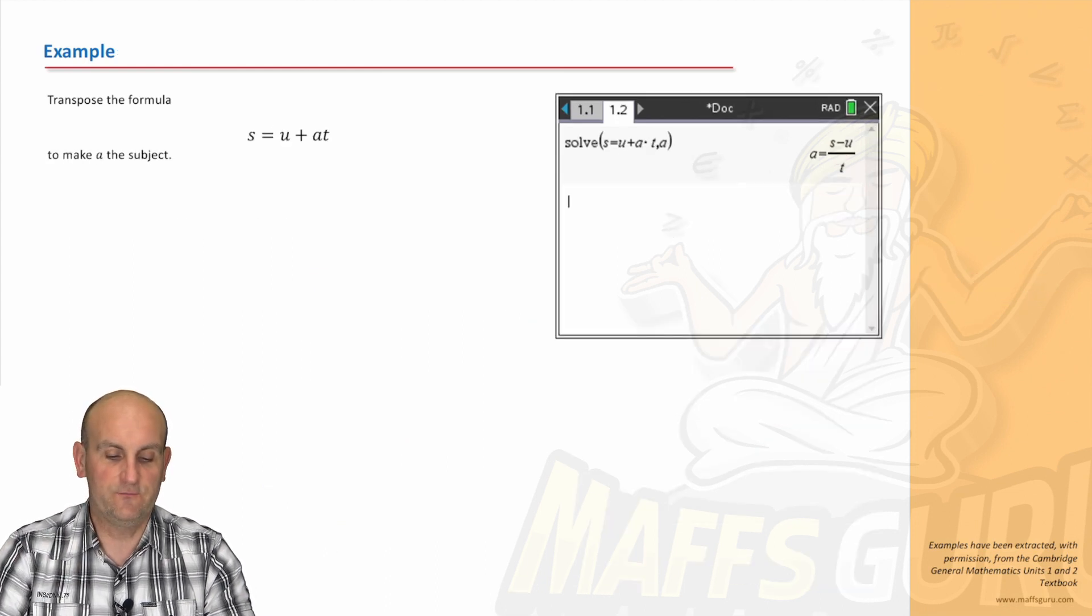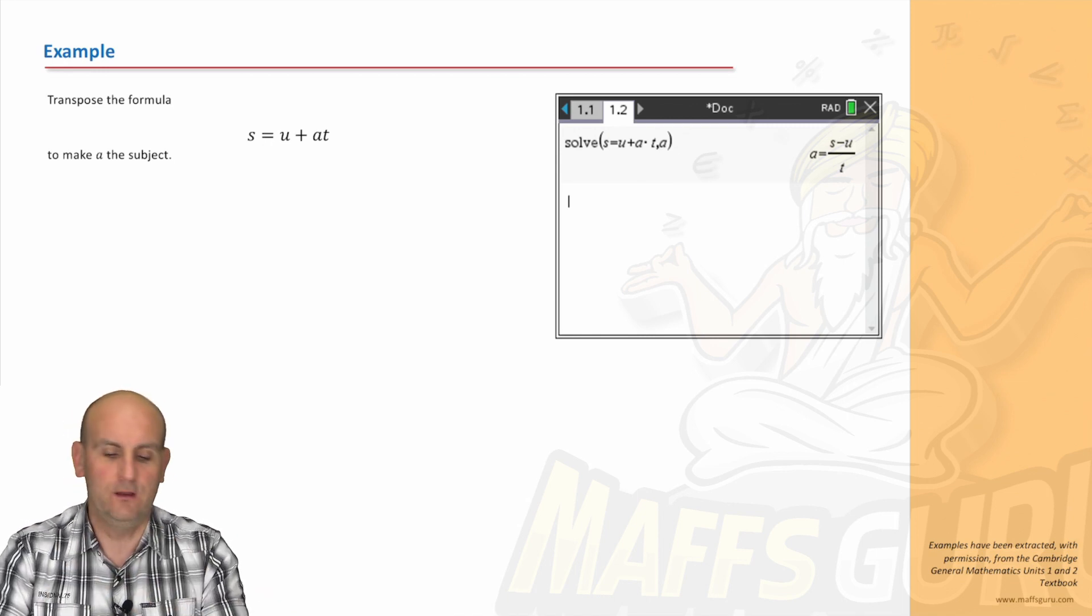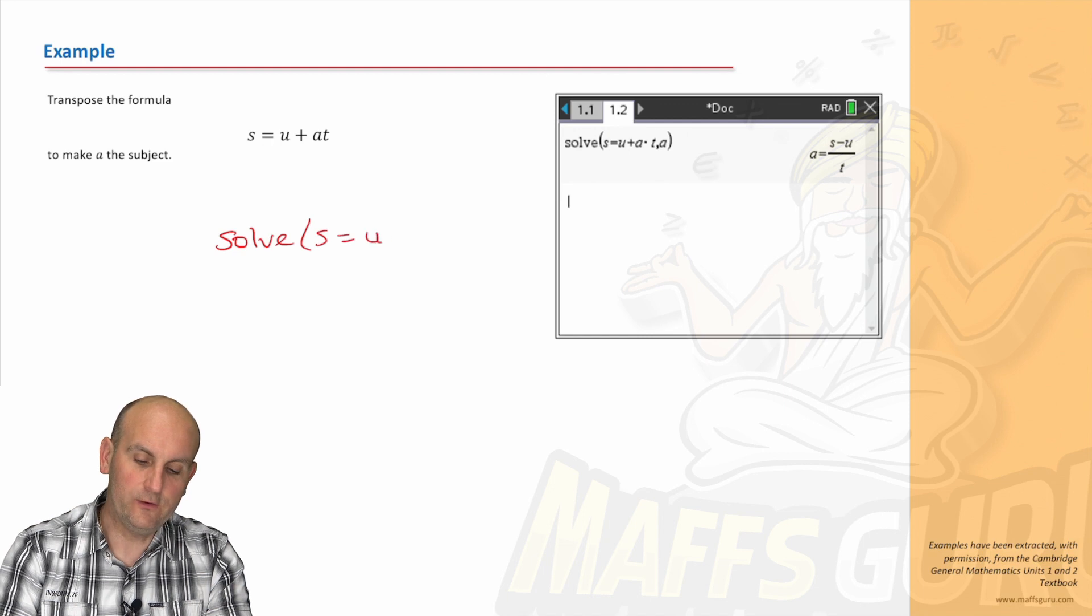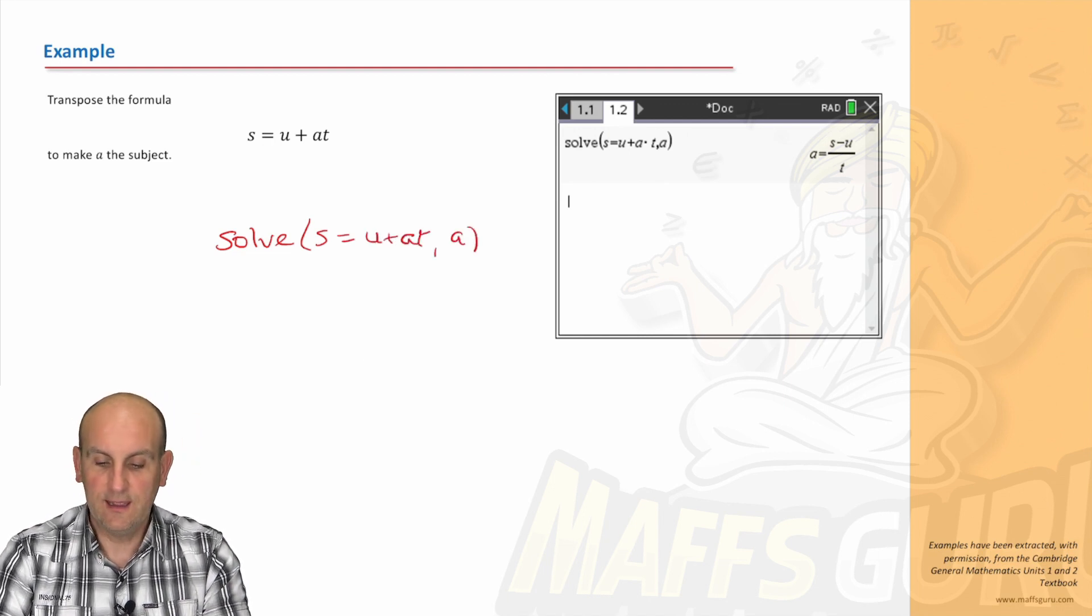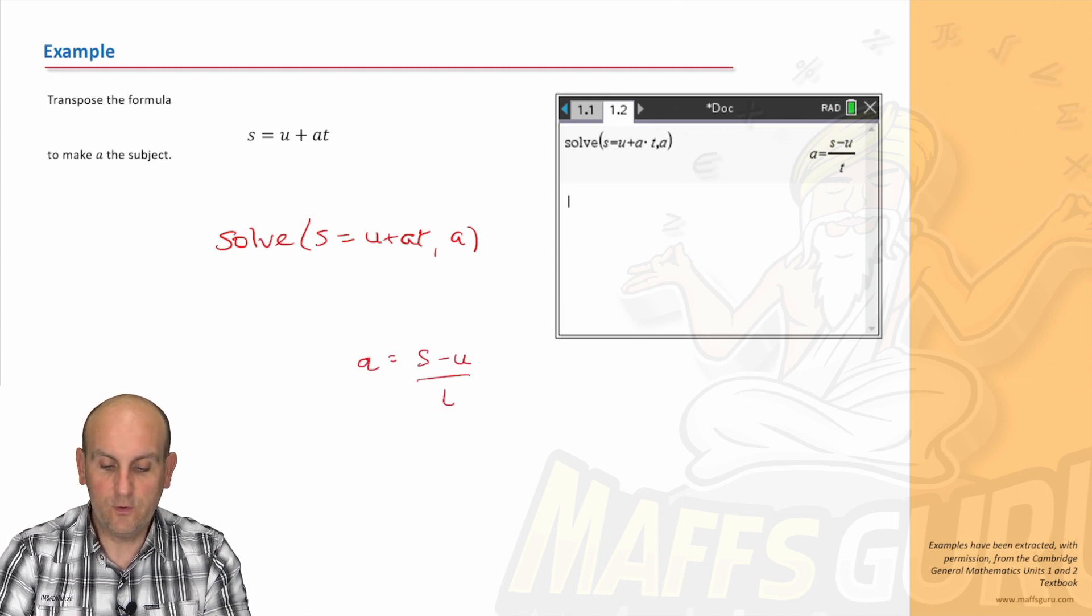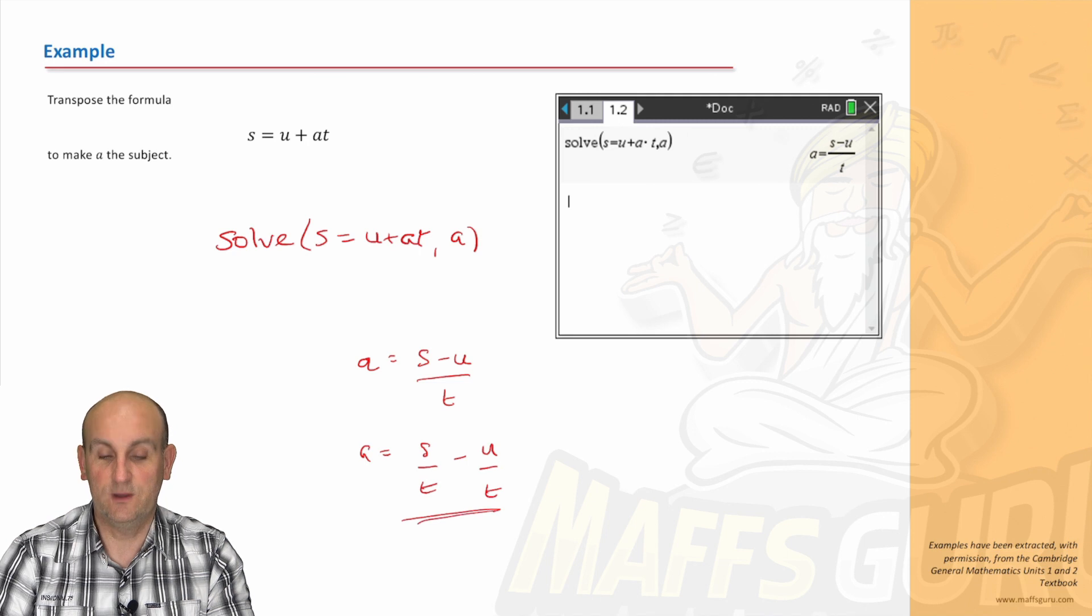Alright, here's another example. Transpose the formula S equals U plus AT to make A the subject. I want A on its own, so again I'm going to do solve: S equals U plus AT comma A. And what came out? A is equal to S minus U on T. Or if I wanted to and I wanted a proper fraction, I could have done S minus U on T as well.